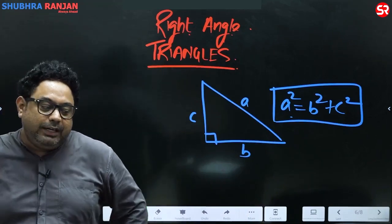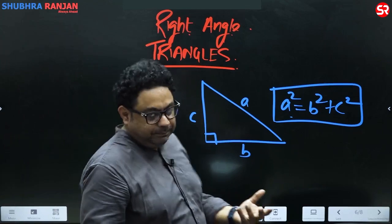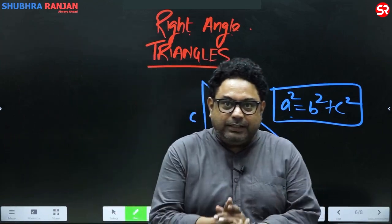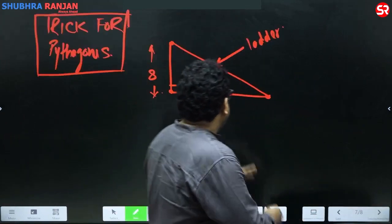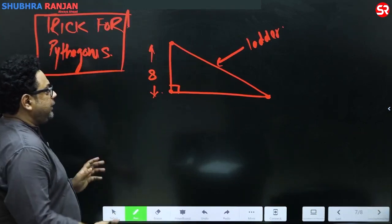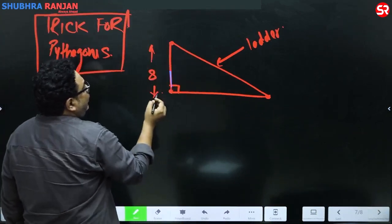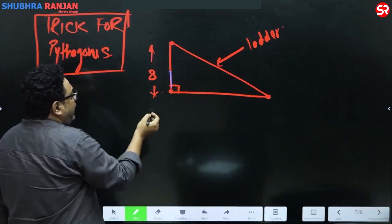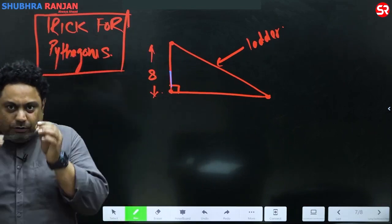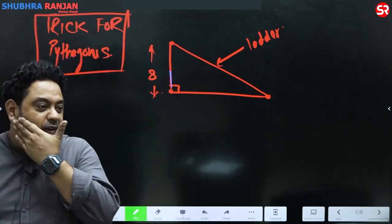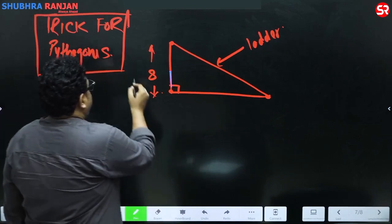What I'm talking about now is a beautiful trick on Pythagoras theorem. Here is a question — a situation: this is a ladder and it leans against a wall of height eight.